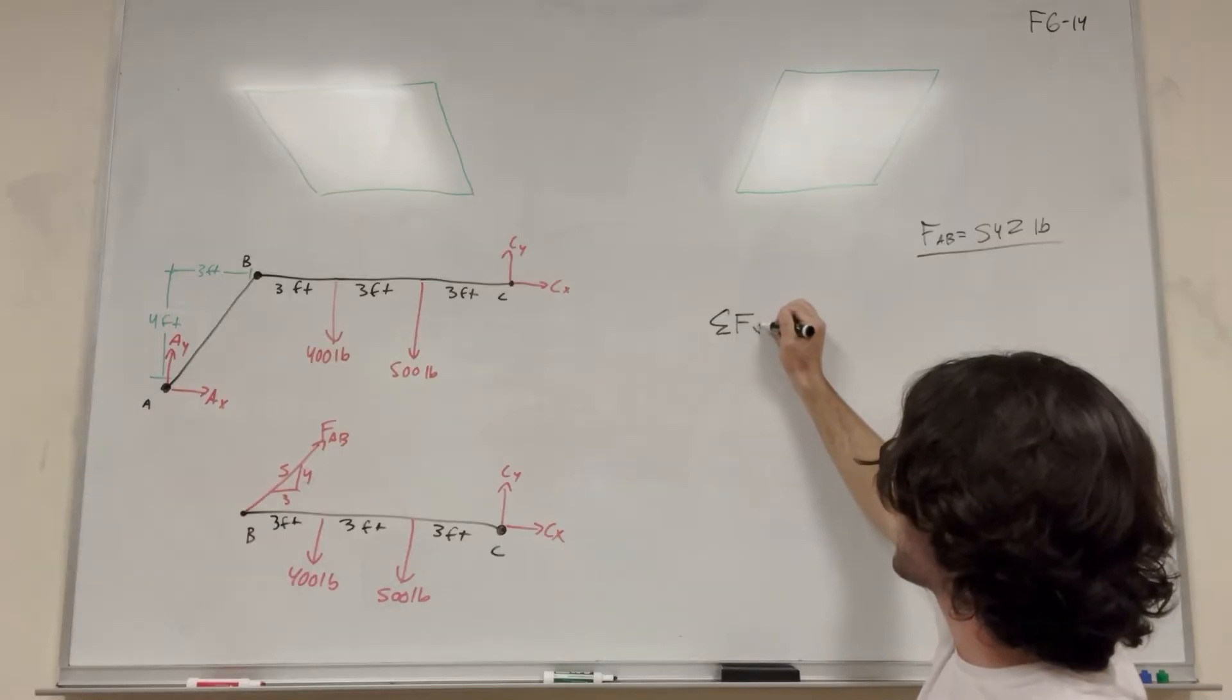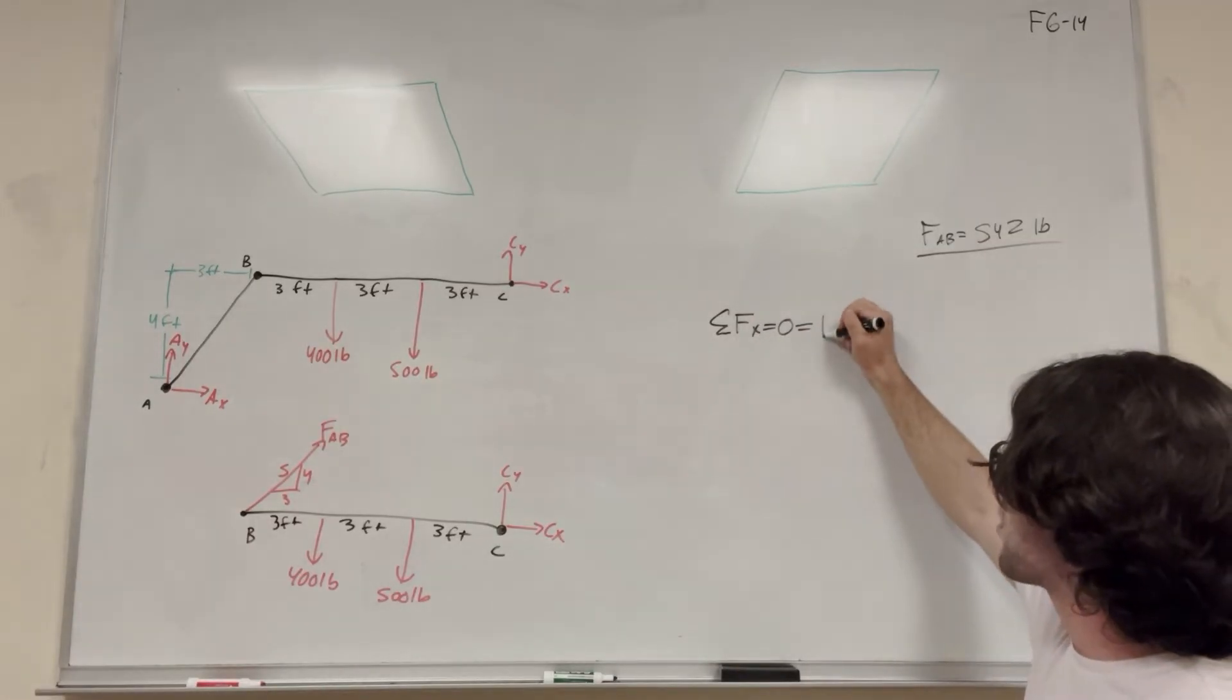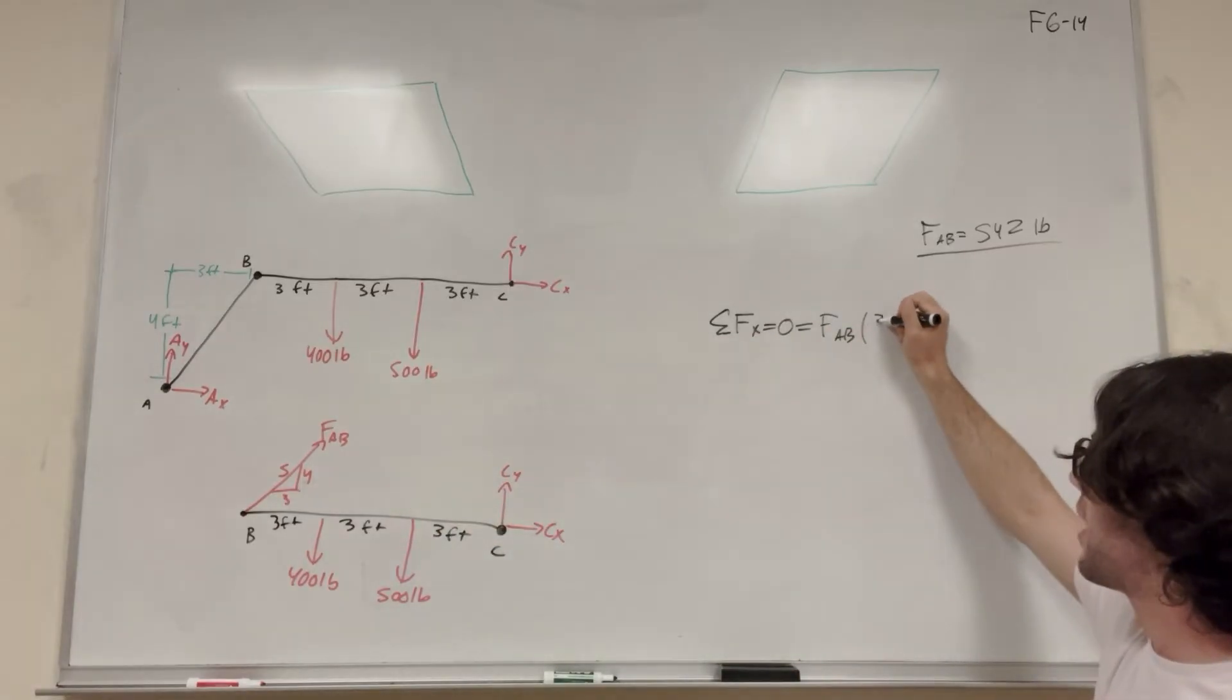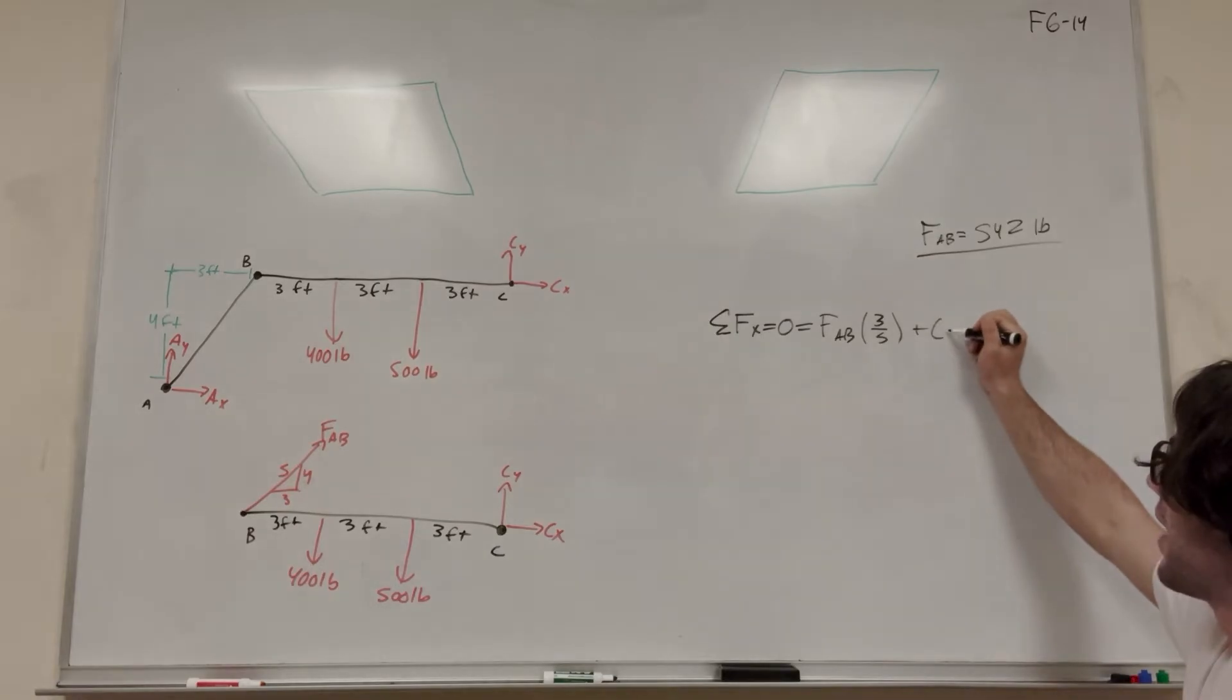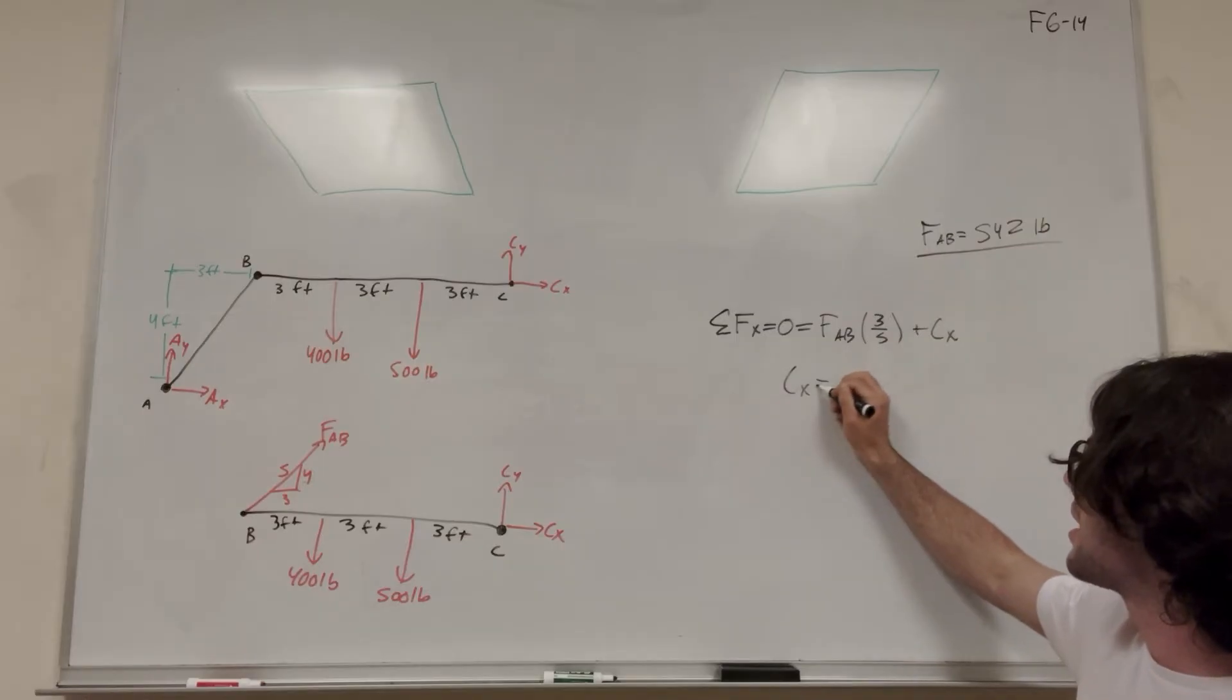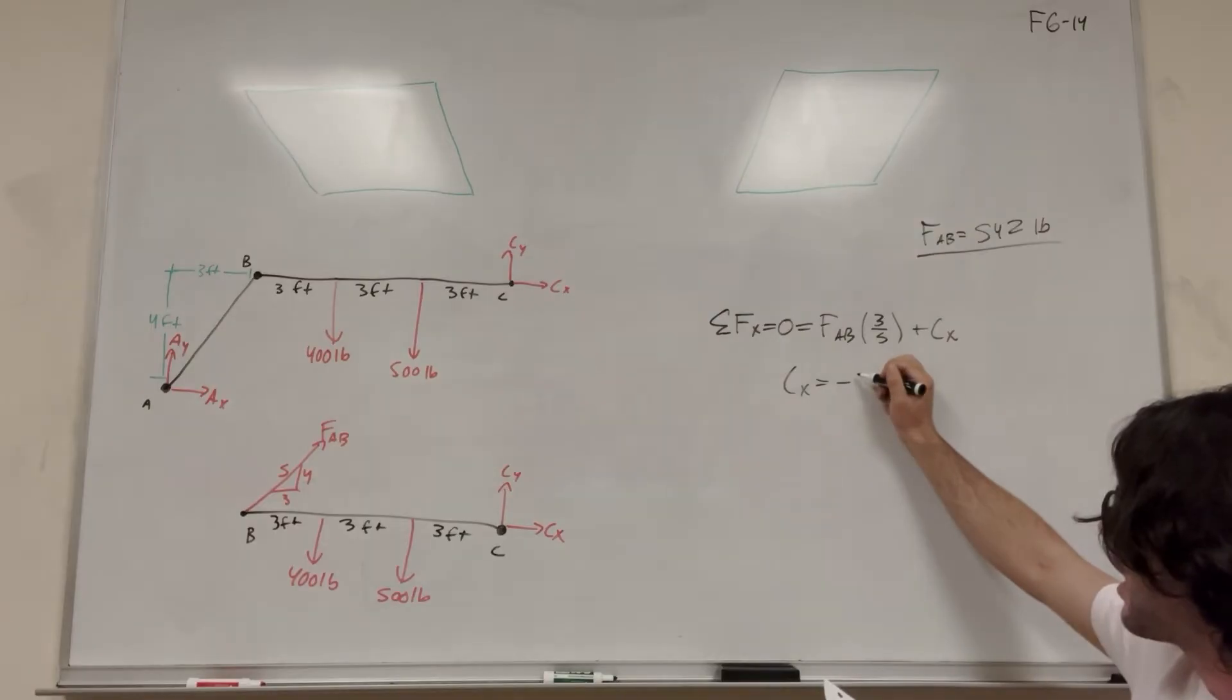If we want to find C_X, let's do sum of the forces in the x direction. Sum of the forces in the x direction is equal to zero. We're at equilibrium. So it's going to be force AB. That's pushing in the positive x direction, and we have to take the ratio. It goes 3 in the x direction for every 5, so we're going to multiply it by 3 fifths. And then we're going to add C_X. So you're going to find by moving C_X over that C_X is equal to negative, and plugging force AB in here, it's going to be equal to negative 325.